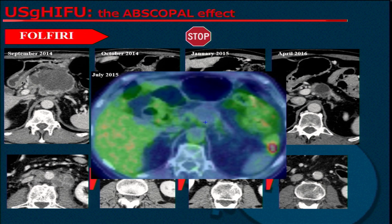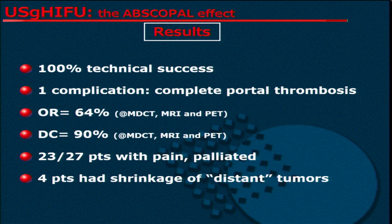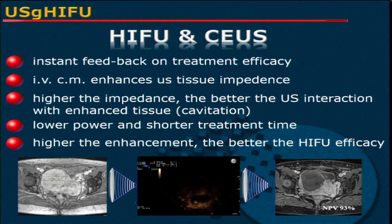Some results, very briefly: we had 100% technical success in all our series. One complication due to complete portal thrombosis required two weeks of hospital admission. The objective response was 64% according to CT, MRI, and PET. Disease control was 90%. Pain palliation was good in the majority of our patients. Four patients had shrinkage of distant tumors — so we had four abscopal effects. In all our series since 2009, we used to inject ultrasound contrast media during treatment in order to enhance mechanical ablation more than thermal ablation.